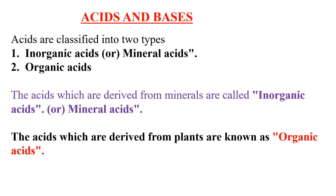First of all, what is an acid? Acids are classified into two types: inorganic acids and organic acids. Inorganic acids are the acids which are derived from minerals, so that is why they are called mineral acids, or we can call them inorganic acids. What are organic acids? The acids which are derived from plants are known as organic acids.